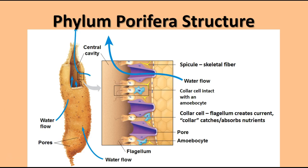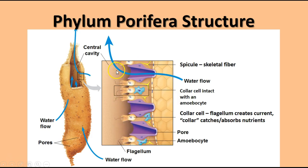The structure of most sponges is more or less like this: there is a place where it attaches to the surface, pores in the outer surface, a central cavity, and an opening at the top called an osculum. When the collar cells lining the central cavity move their flagella, they create a current that brings water in through the pore cells, up through the central cavity, and out the osculum at the top. As that occurs, the collar cells can also trap plankton and other small things in the water to be consumed by the sponge.